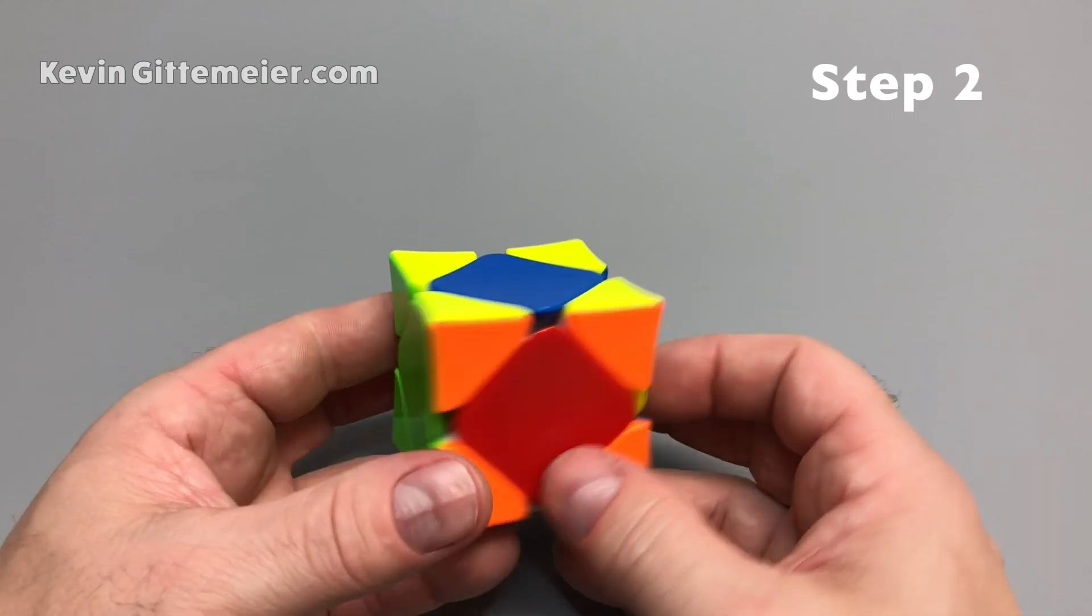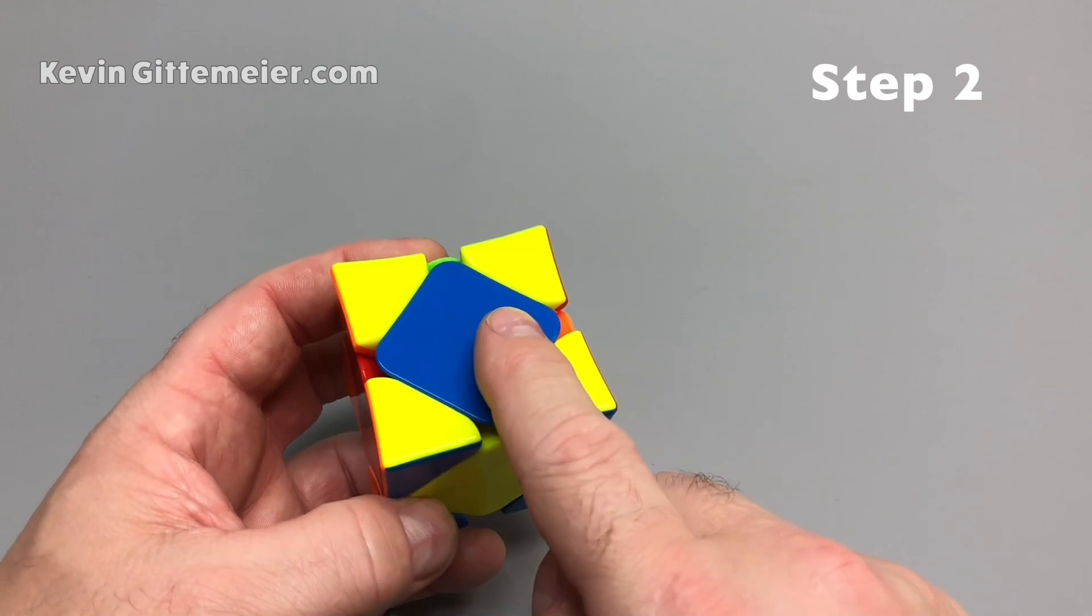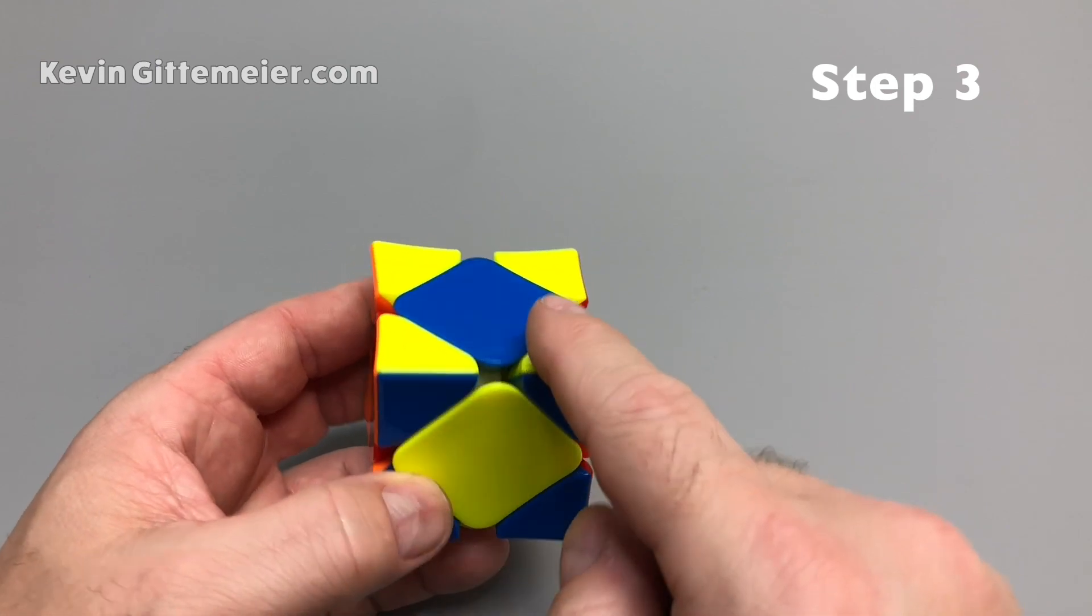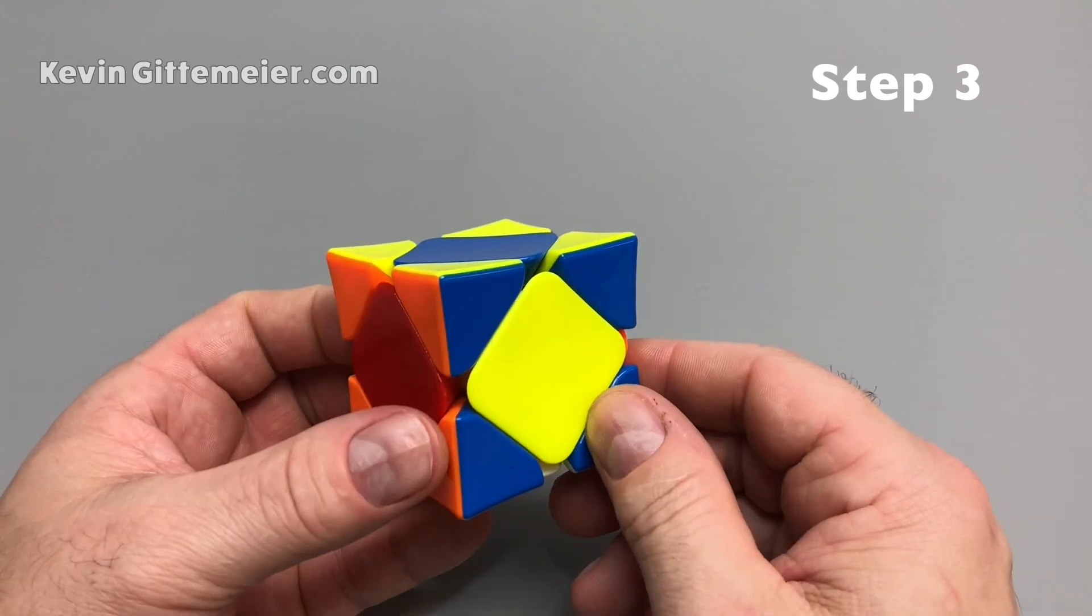So now that I've got all the yellows on top, I want to get this yellow center on top to solve the top layer. Okay, now to get the yellow center on top to solve the top layer, we're going to use that same sequence, but now we're going to learn a little more about it.